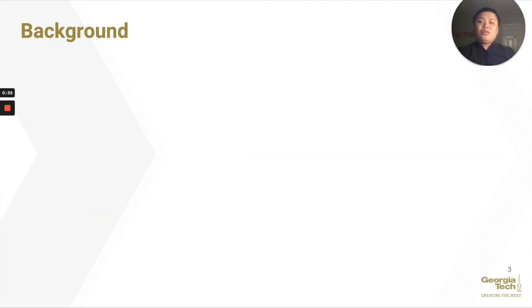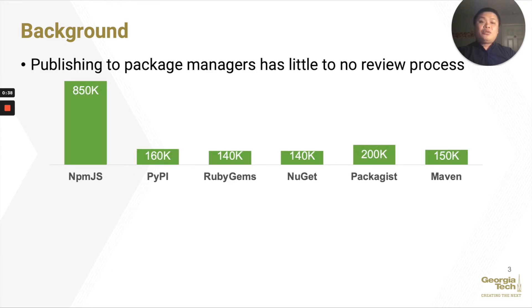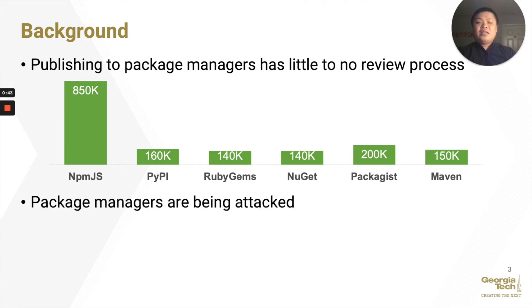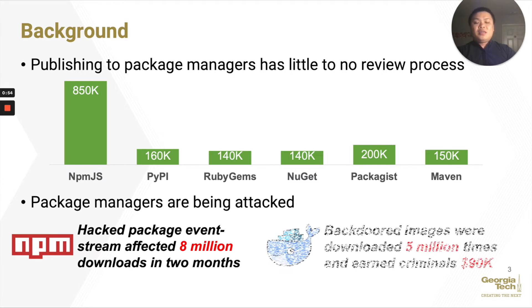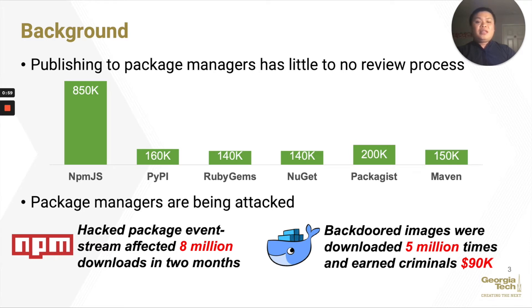However, we noticed that there is currently little to no review process for publishing packages to many package managers, and package managers are actually being attacked. For example, EventStream is a package in NPM that was abused to affect over 8 million downloads. Similarly, backdoor Docker images were downloaded over 5 million times and earned criminals over 90 thousand dollars.